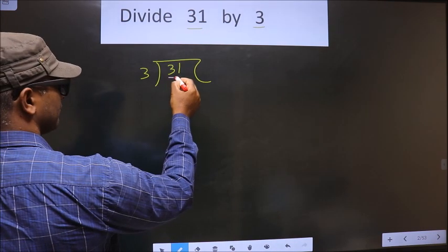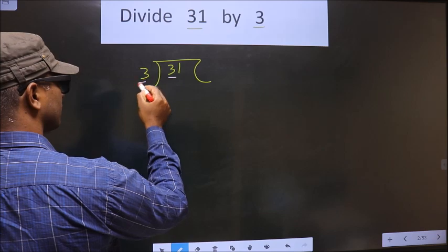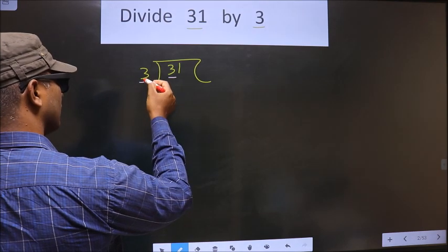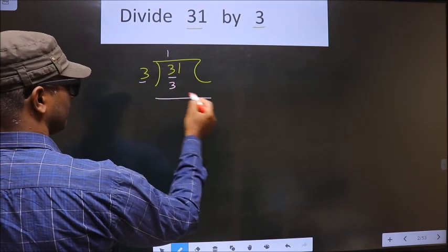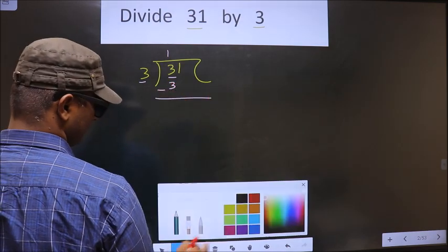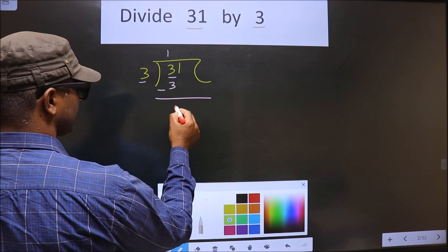Now here we have 3. Here also we have 3. When do I get 3 in 3 table is 3 once 3. Now we should subtract. So 3 minus 3 is 0.